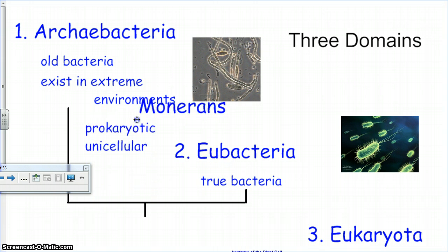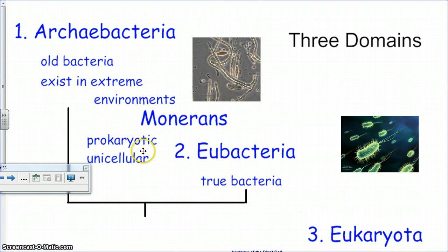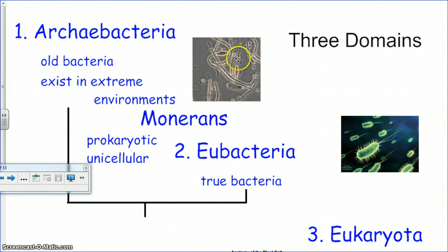Monerans are prokaryotic, which means they don't have a nucleus, and they're unicellular, which means they're made of one cell. So if you think of what a bacteria looks like — these bacteria are unicellular. Each one is a separate bacteria, and each cell has no nucleus. So archaebacteria and eubacteria are both prokaryotic and both unicellular.